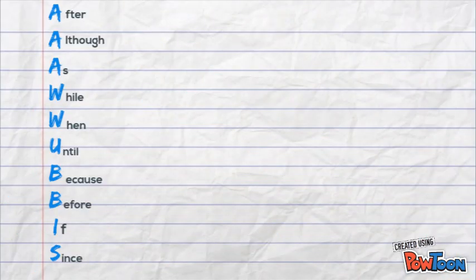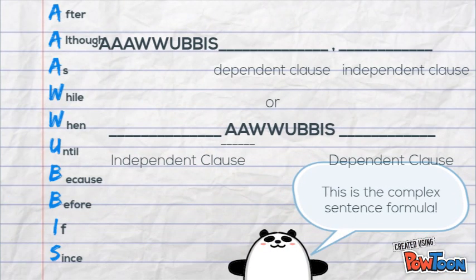You'll usually see one of two formats on the screen. The most common one is where the dependent clause comes first. Think about a mom, a baby, and its diaper — those three need to go together, just like the AAAWWUBBIS dependent clause and the comma.